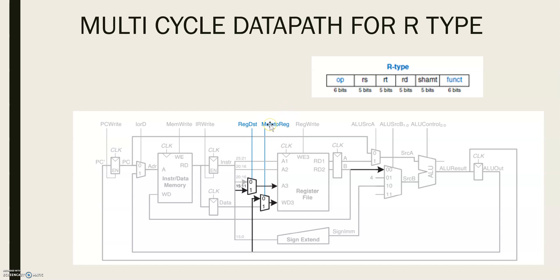The MEM2REG select line decides whether WD-3 comes from either ALU-OUT for an R-Type instruction or from DATA for a load instruction. The REG-DST select line selects whether the destination register is specified either in the RT field, bits 16 to 20, or RD field, bits 11 to 15 of the instruction.